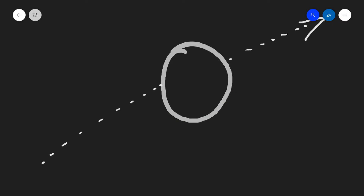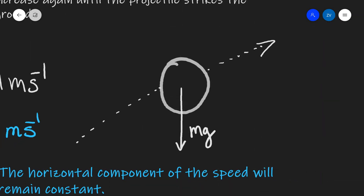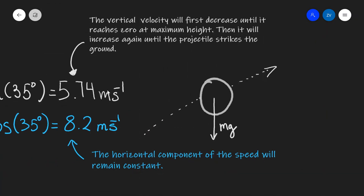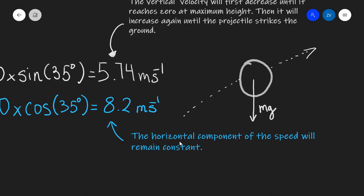When our projectile is flying, there's only one force acting on it, and that is the weight mg acting straight down. This means that only the vertical component of the velocity is going to change, because there are no horizontal forces, again assuming there is no air resistance. So the vertical component of the velocity will initially be decreasing as the projectile goes up, then it reaches zero at maximum height, and then it will start to increase again as the ball starts to fall. On the other hand, our horizontal component of the speed will remain absolutely constant.